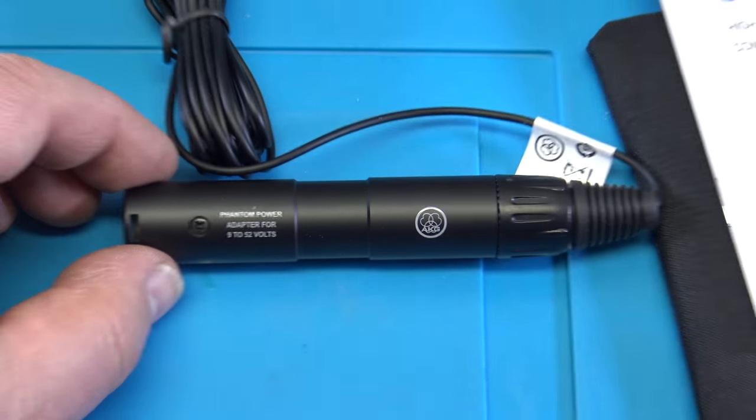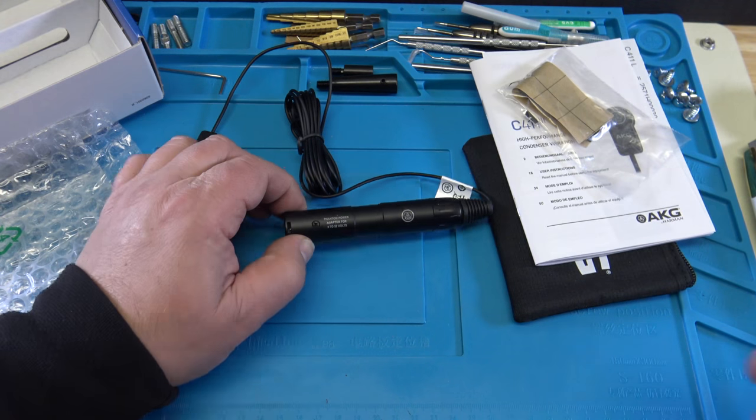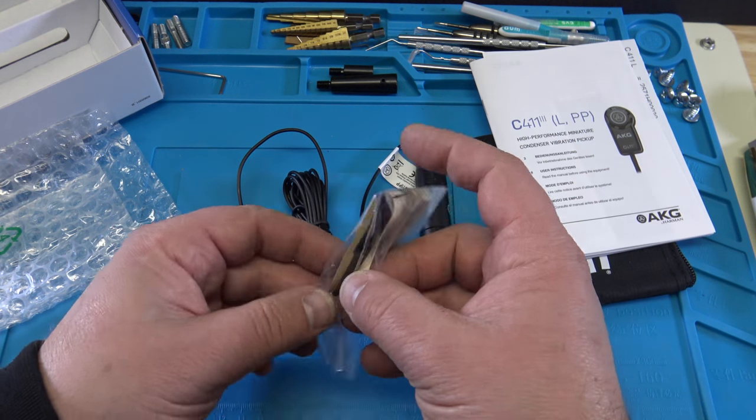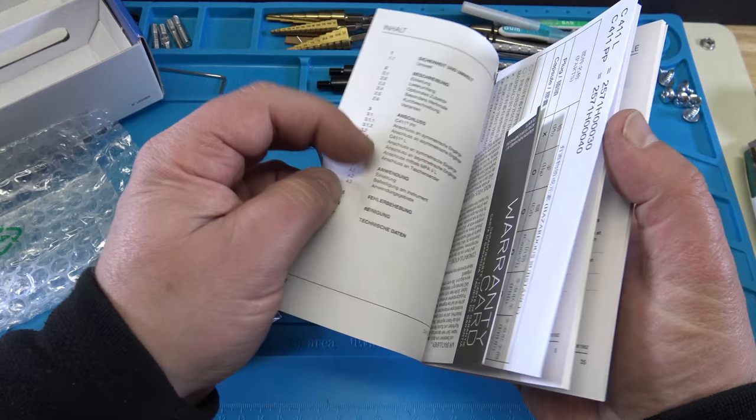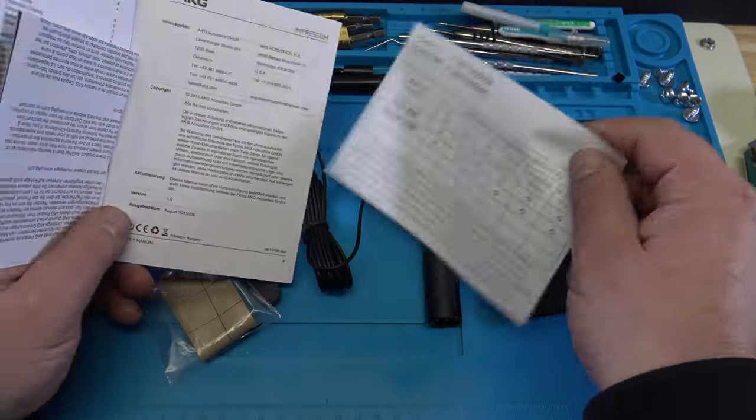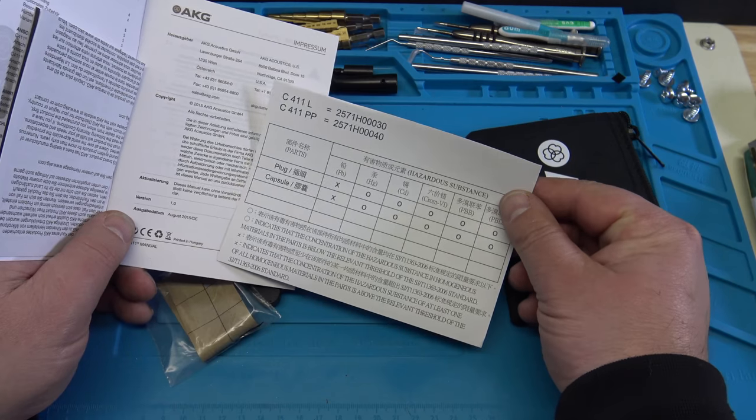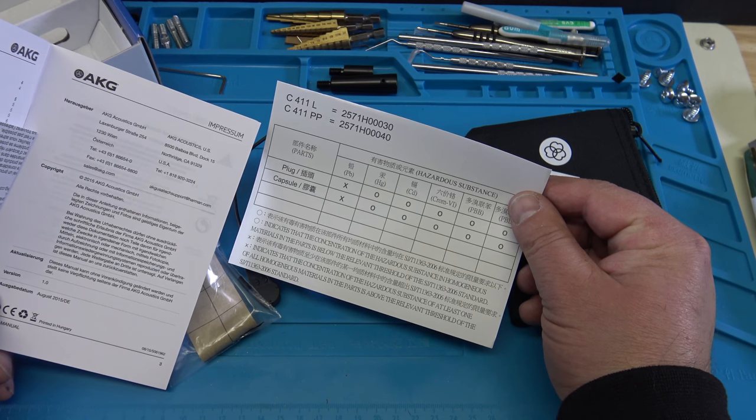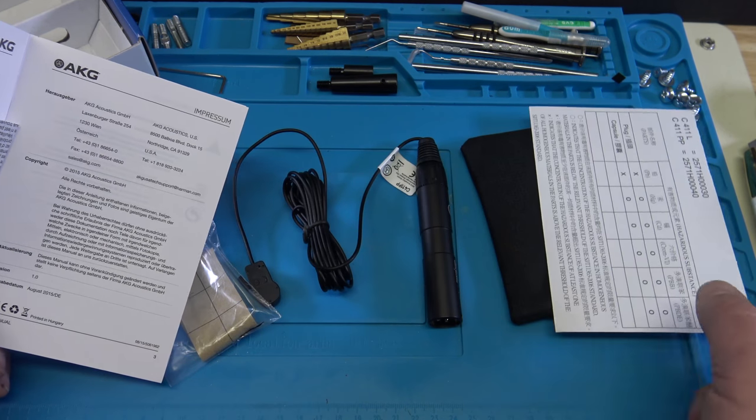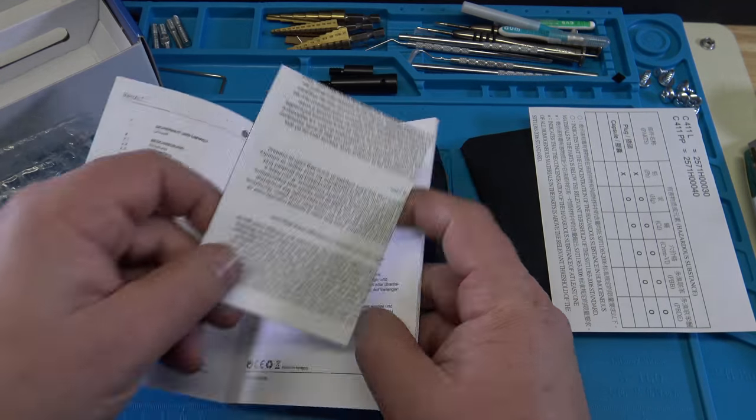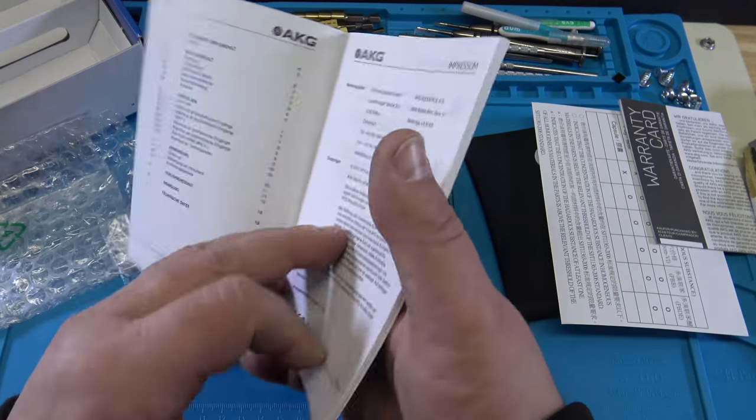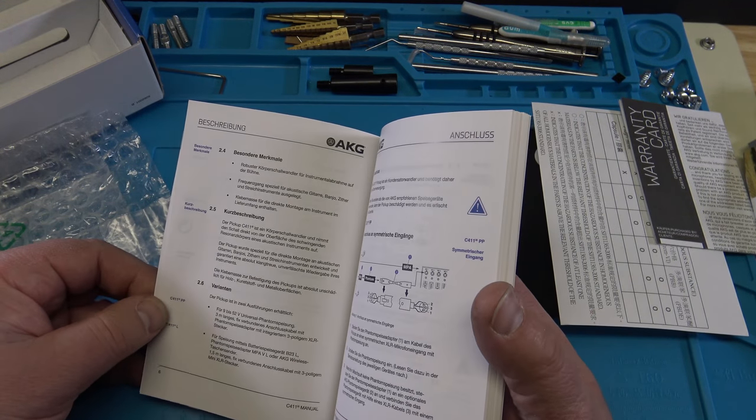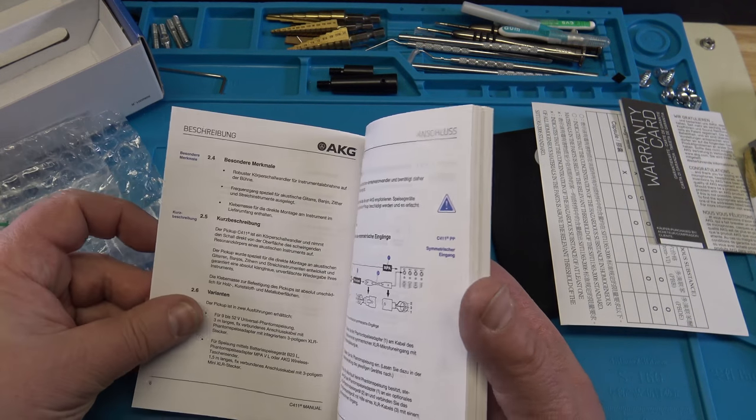Okay, so that's how that looks like. In the manual here we have the warranty card and the card about the lead content of it, so it has lead in it. It's probably the solder, leaded solder in there, which I think is a good thing if you want this thing to last a long time. That's what it is. Reading the book, and then we're going to install this on a ukulele to see how that looks.